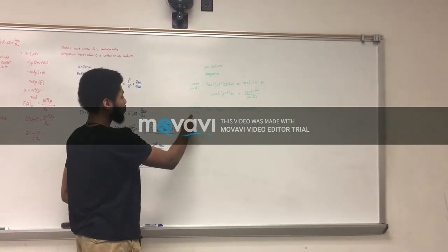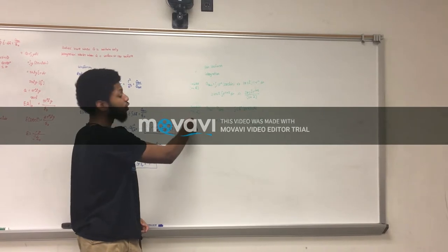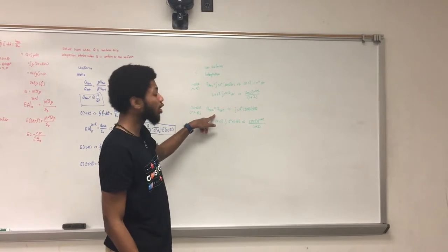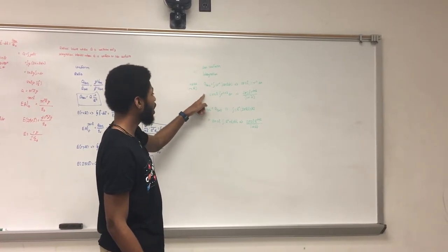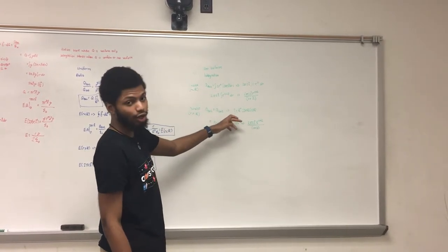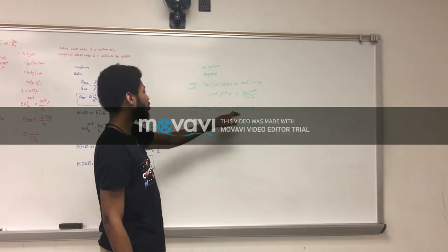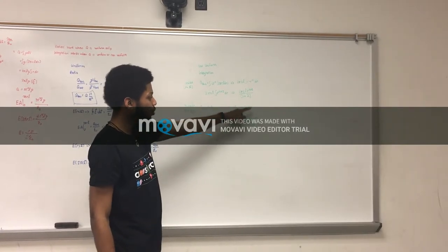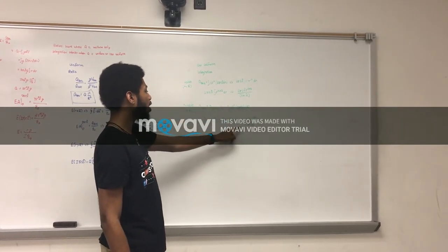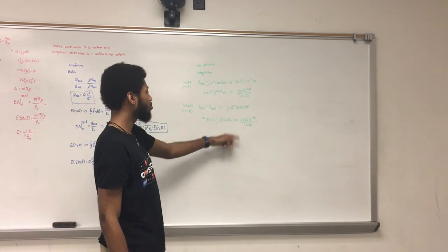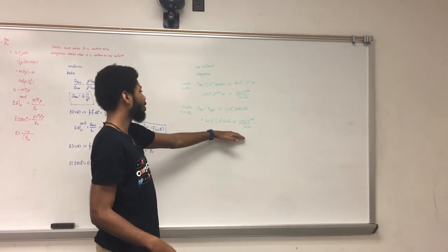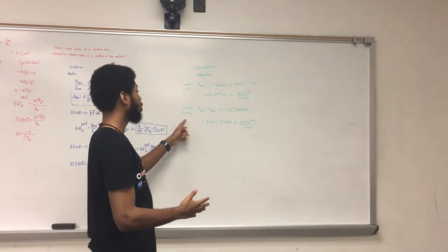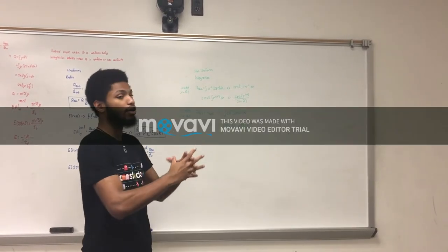When you have little r bigger than big R, your q enclosed is equal to your q total. It follows the same process as inside, except we use big R instead of little r. You get the same answer, except where little r was, you now have big R: 2 pi cl times big R to the power of n plus 2, all divided by n plus 2. This is because little r is enclosing the whole big R — not just part of it.